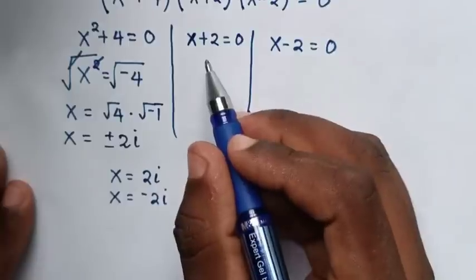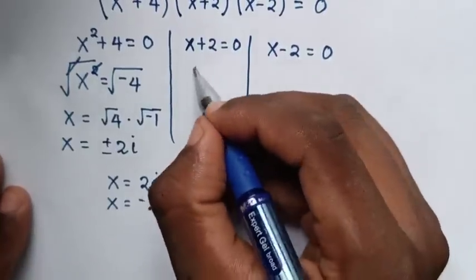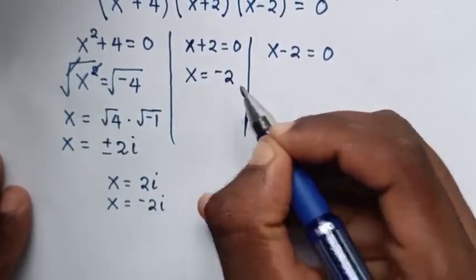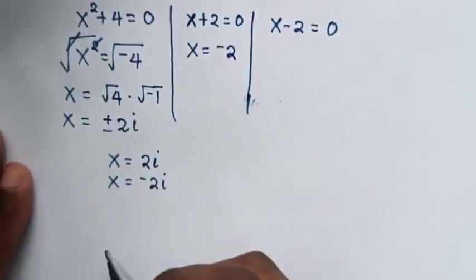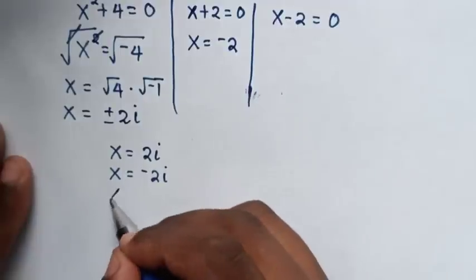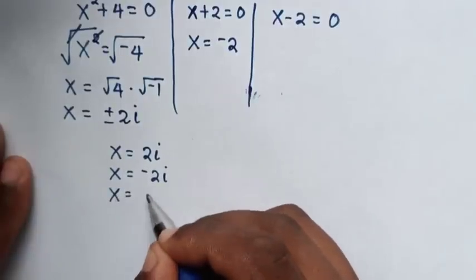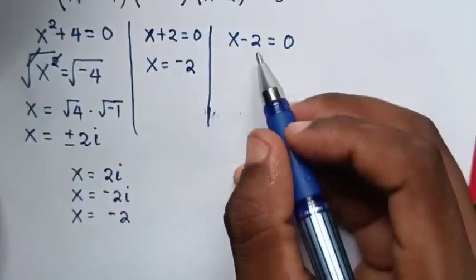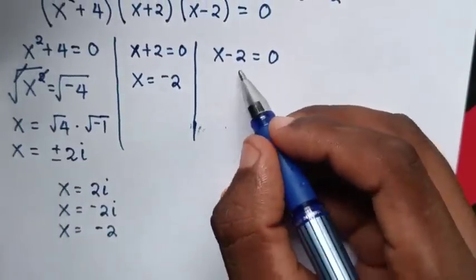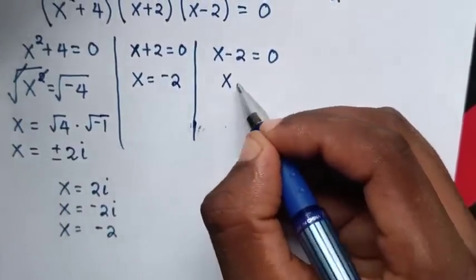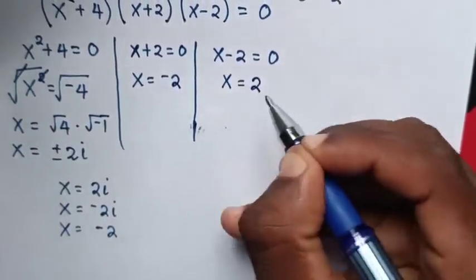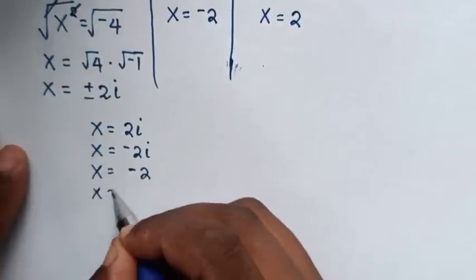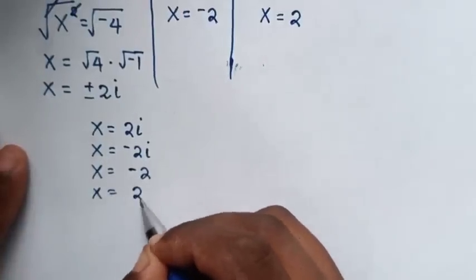From x + 2 = 0, we take 2 to the right side, giving x = -2. So the third root is x = -2. From x - 2 = 0, we take -2 to the right side, giving x = 2. Therefore the fourth root is x = 2.